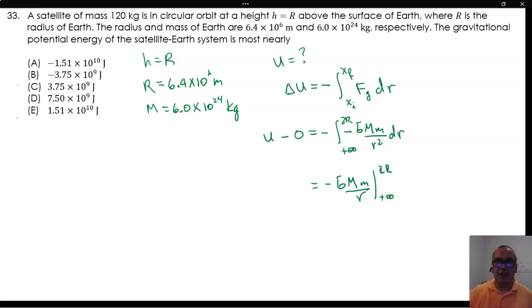That is equal to negative GMm over 2r. Substituting the numerical values,